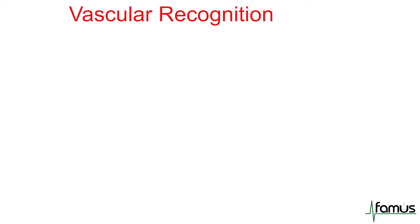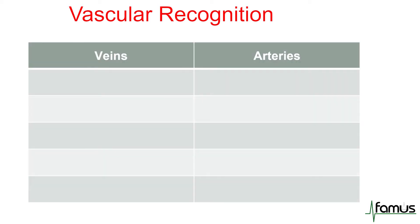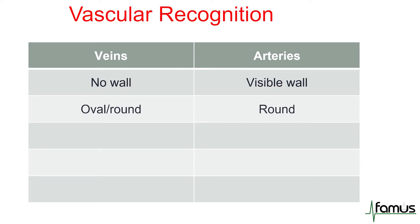Many of you will be very familiar with what represents a vein and what represents an artery on ultrasound, but just to clarify: veins tend to have a very minimally visible wall whereas arteries have a slightly thick muscular wall and therefore are often visible on ultrasound. Veins tend to be oval or round whereas arteries are usually very circular. An artery will tend to be pulsatile, and this is particularly obvious when you're putting any pressure on the artery, whereas veins won't be pulsatile.